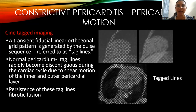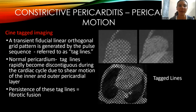In constrictive pericarditis, pericardial motion is assessed with cine tagged imaging, where a transient fiducial linear orthogonal grid pattern — referred to as taglines — is generated by the pulse sequence. In normal pericardium, the taglines rapidly become discontinuous during the cardiac cycle due to shear motion of the inner and outer pericardial layers. Persistence of these taglines can indicate fibrotic fusion.